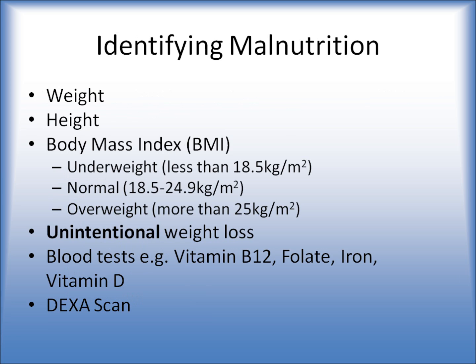How do we identify malnutrition? We use a variety of ways, but one of them is using the patient's weight, and we also get their height, and we can calculate something called body mass index, or BMI. That tells us if you're overweight, underweight, or within the normal range. We also look at unintentional weight loss — we're not worried if you've been trying to lose weight, but when you're not trying and the weight is still coming off.